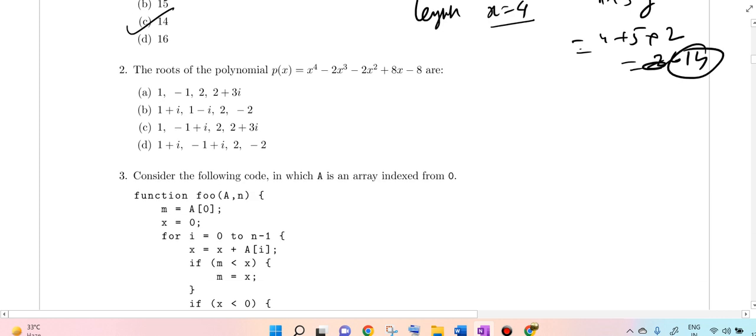Next question: the roots of the polynomial. First of all, let me talk about the real roots. By Descartes rule of sign, if we proceed, how many sign changes are here? 1, 2, and 3. So 3 positive real roots.